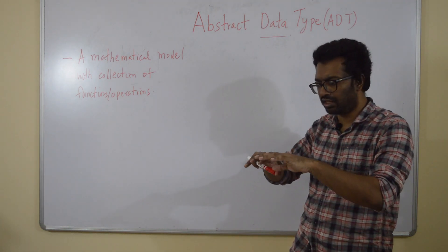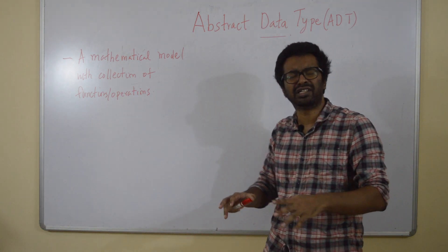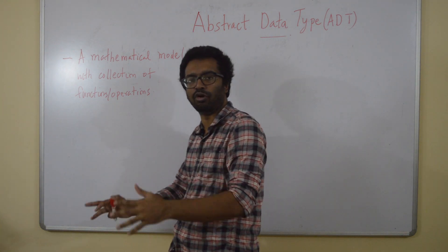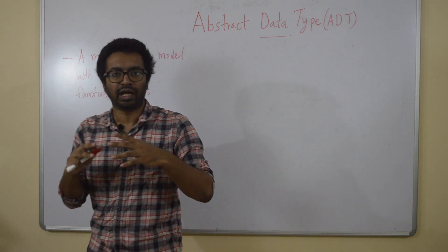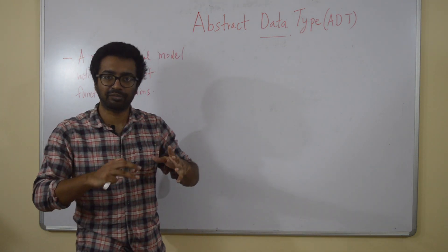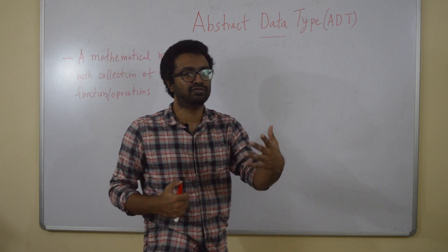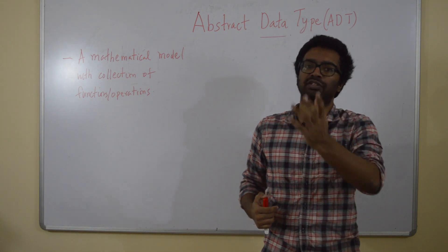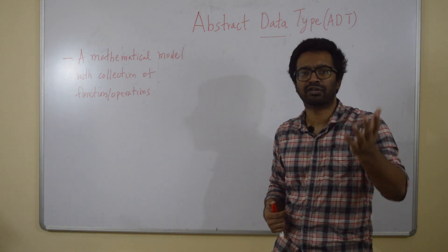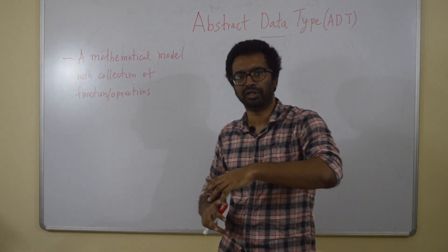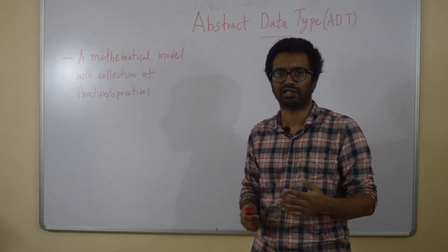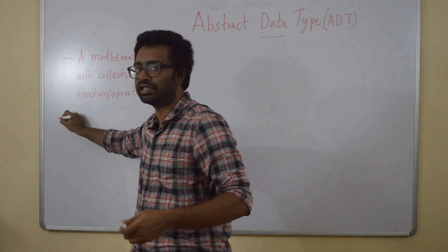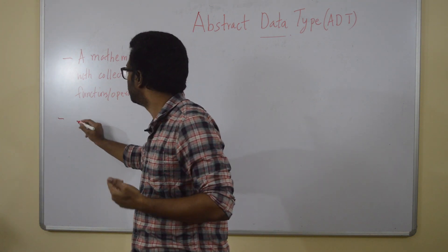So an abstract data type is a generalization of this idea. An integer is a primitive data type with these few operations. And an abstract data type is a generalization of this idea to something which may contain more functions, etc. So it's a generalization of primitive data type.